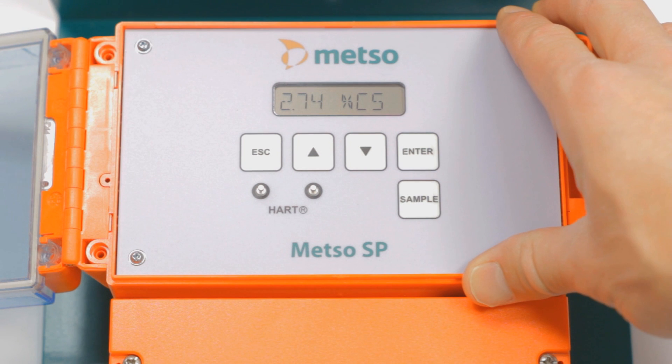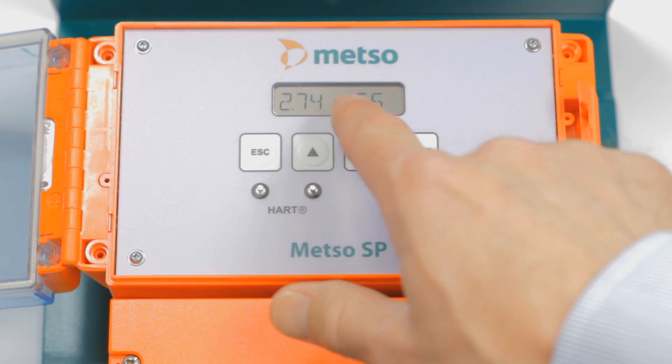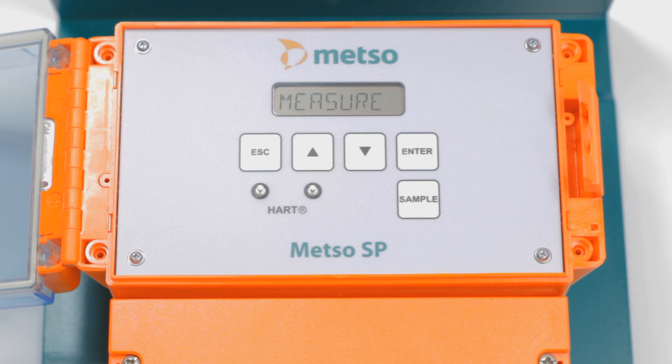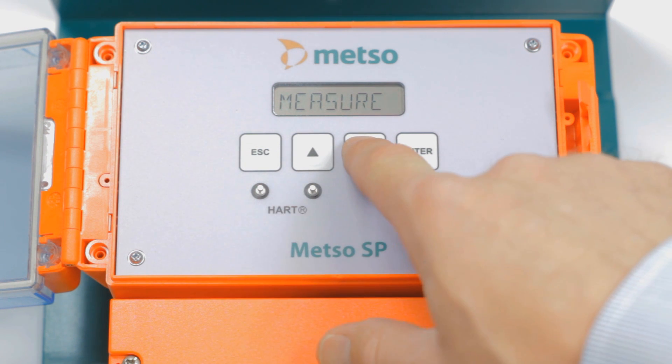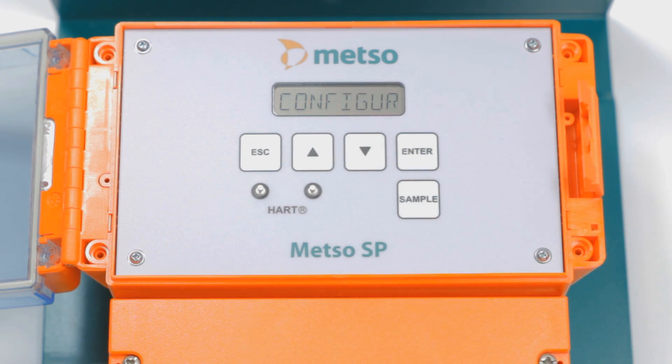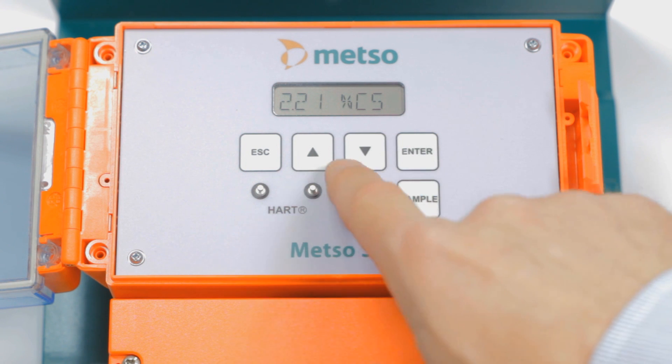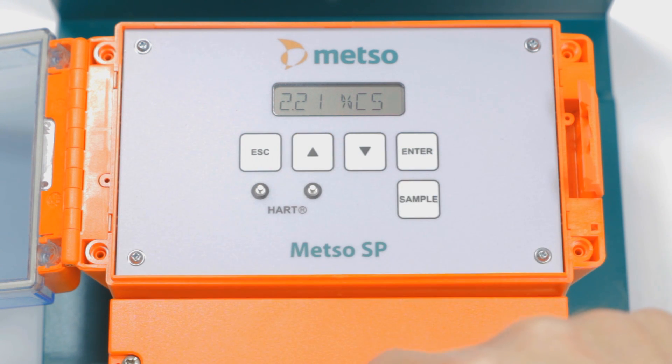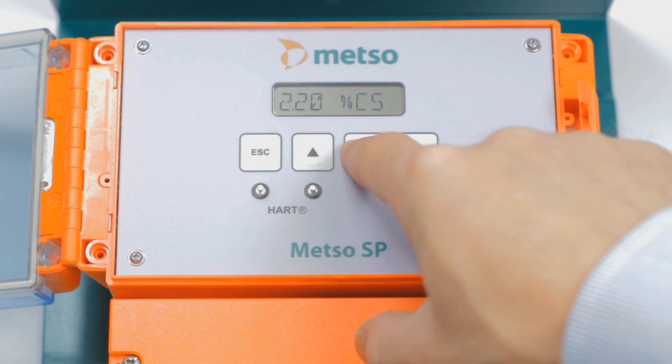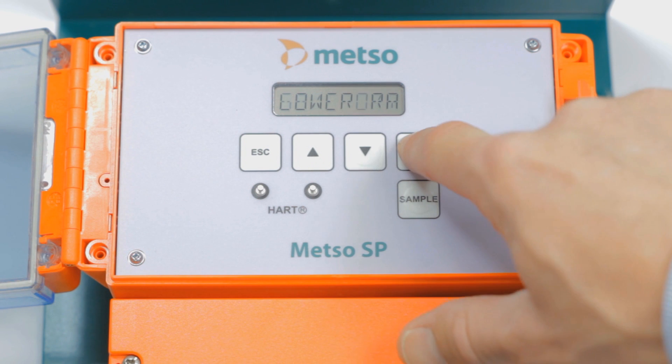Typically, when you approach the display in the mill, it's going to be measuring consistency, which is under the measurement menu. As we talked about, we're going to go to the configuration menu to set the transmitter up. We're going to hit enter. And we're going to hit enter again, lower range. And we want to set that lower range at 2.00, so we just hit the arrow down button. And hit enter to accept it.